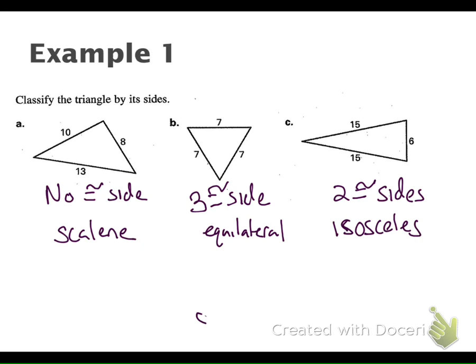So we see: no congruent sides is scalene, three congruent sides is equilateral, two congruent sides is isosceles.